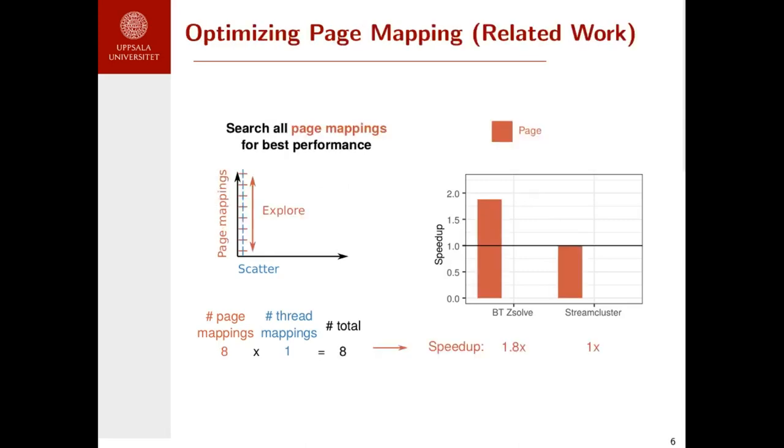Related work have tried to improve the page mapping. They select the fixed thread, the default thread mapping scatter, and they explore different page mappings. We can see that this exploration can provide performance gains, but it comes with a cost. We now need to execute the application eight times in order to explore the search space of the different page mappings.